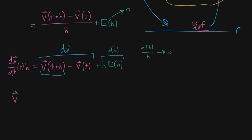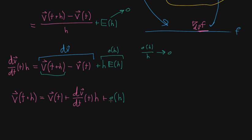So now I use this entire expression to write v of t plus h, which we see showing up in the original definition we care about. That v of t plus h — that nudged output value — equals the original value v of t, plus the derivative term multiplied by h, almost like a Taylor polynomial where this is our first-order linear term. And then the rest of the stuff is just some little-o of h. And because this is a vector-valued quantity, that error is a vector, so it's the magnitude of that vector divided by h going to zero.